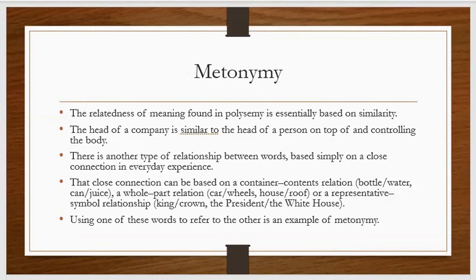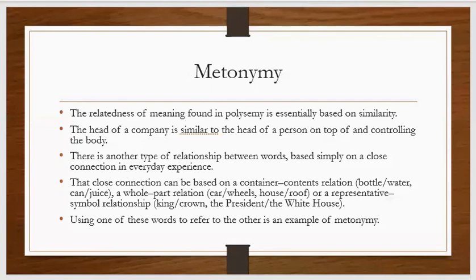That close connection can be based on a container-content relationship, such as bottle and water, or can and juice. It can be a whole-part relationship, such as car and wheels, or house and roof. Or a representative-symbol relationship, such as king and crown, or the president and the White House. We can use one word to mean the other.